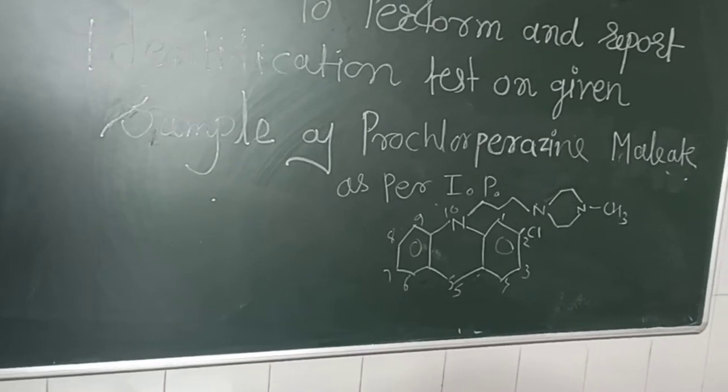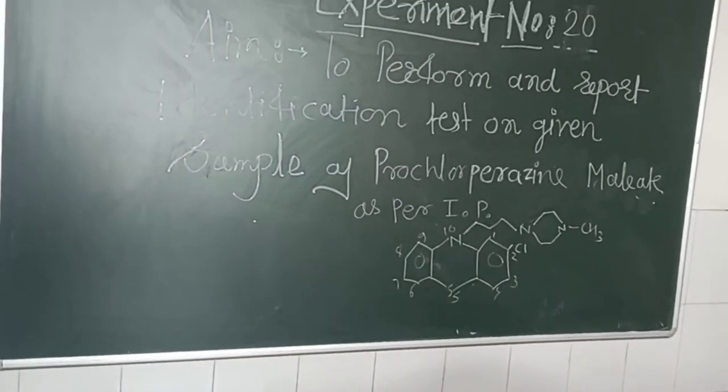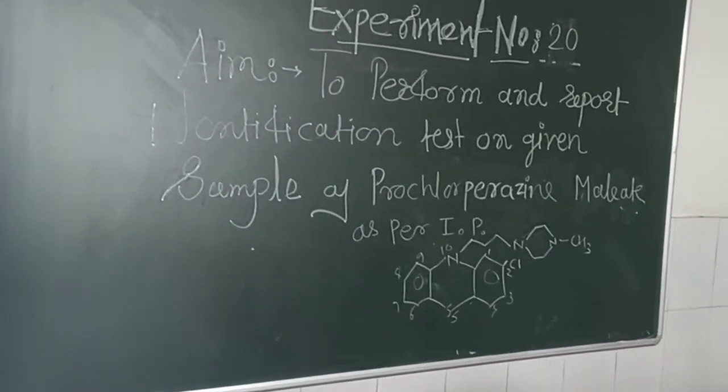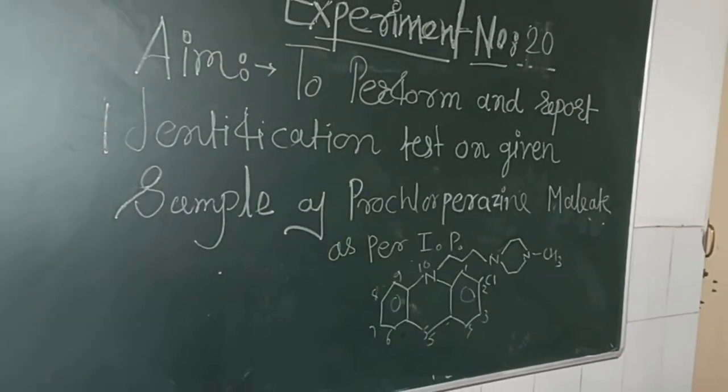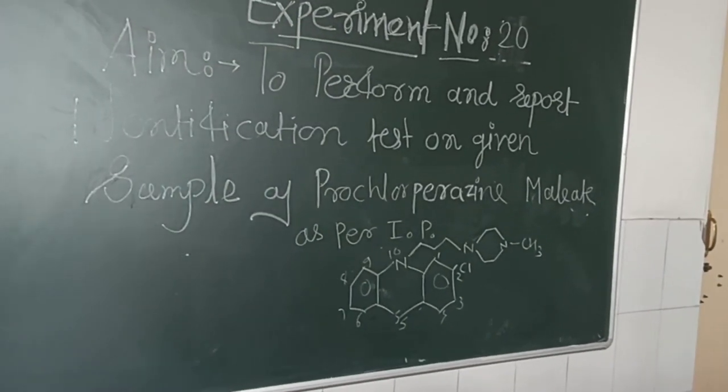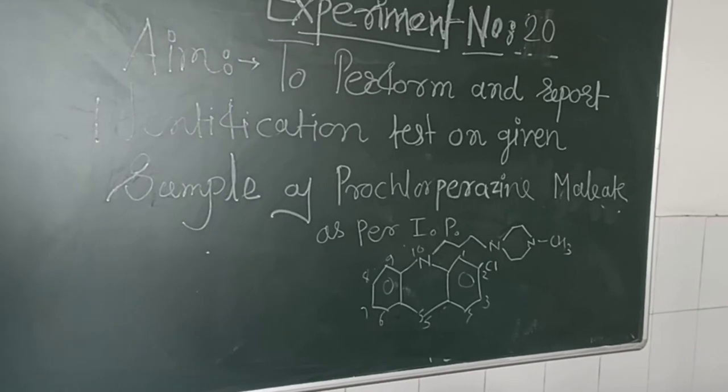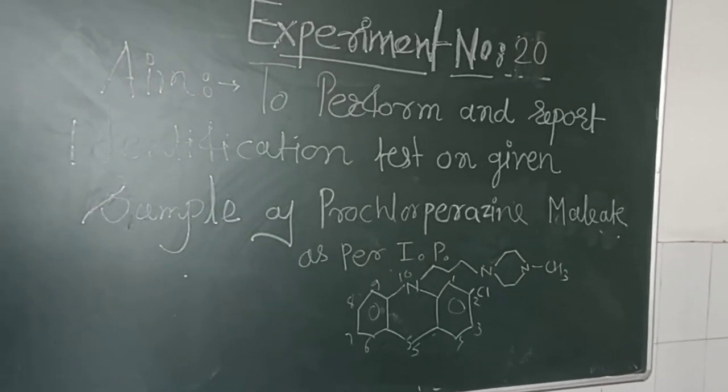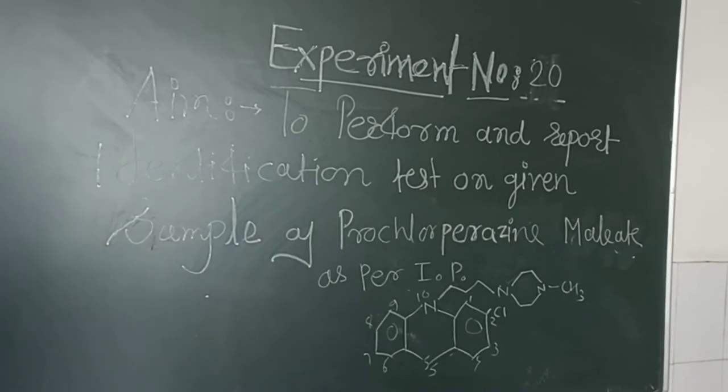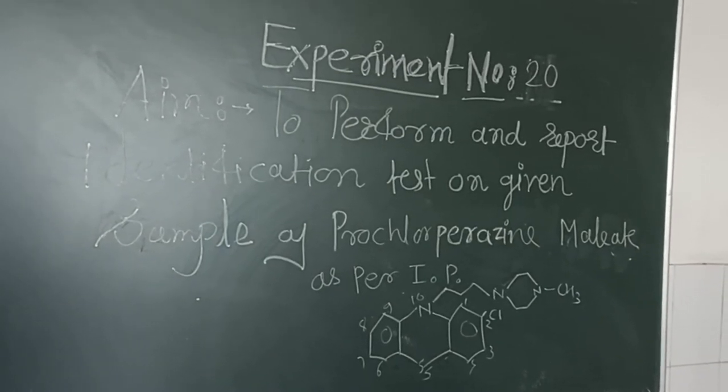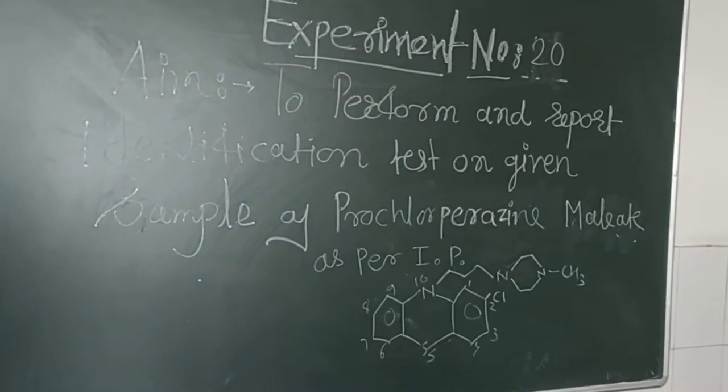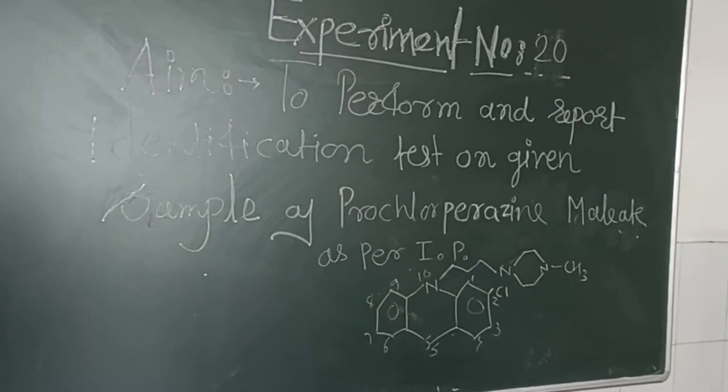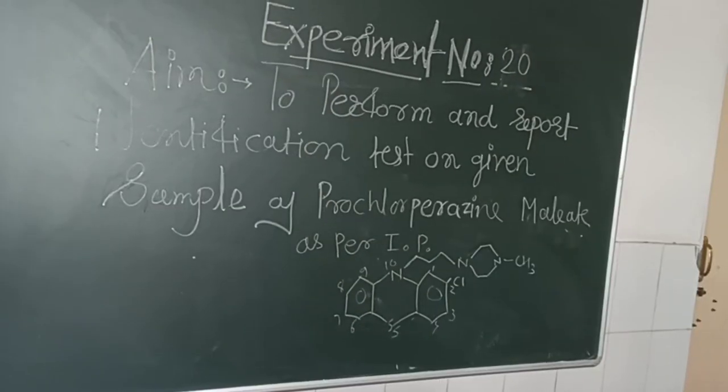So it is the structure of prochlorperazine maleate. The steps involved in identification test are: first, we have the description of the drug, then its solubility behavior and identification tests according to the Indian Pharmacopoeia, and then we have to analyze if it complies the test or not.